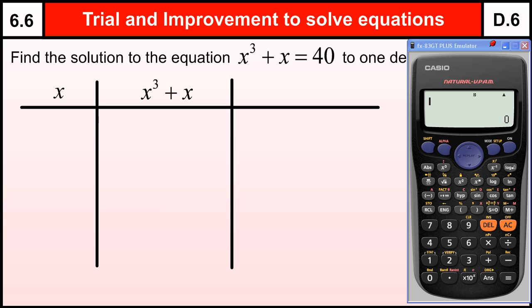Now for me, Trial and Improvement to Solve Equations is actually a Level 7, Grade C topic, but the system that we're using at the moment places it in Level 6. It might be the case that it's simpler versions of this.